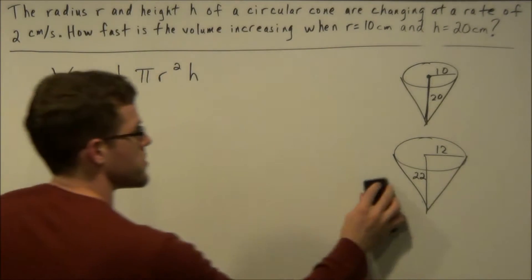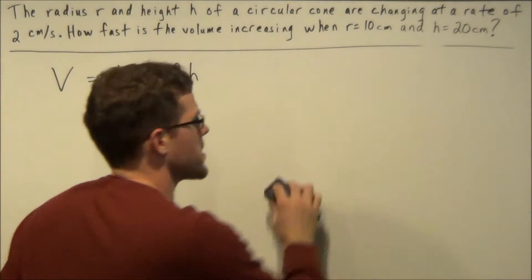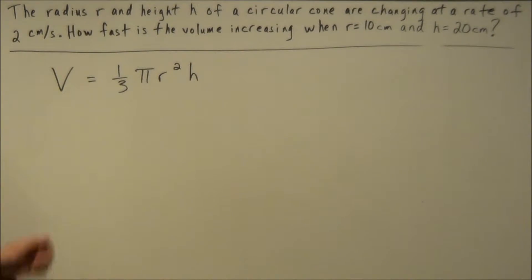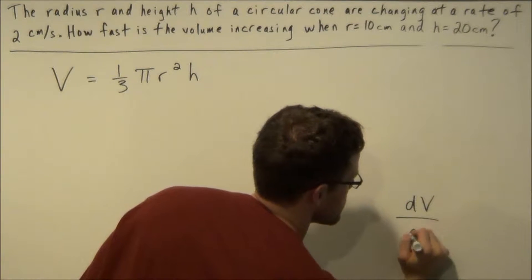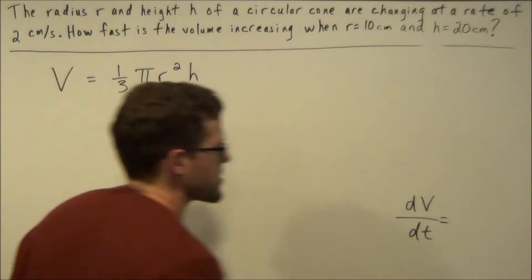So what we're going to do is we're just going to take the derivative of both sides because the task is to find how fast the volume is increasing. So we need to calculate dV/dt for this example.